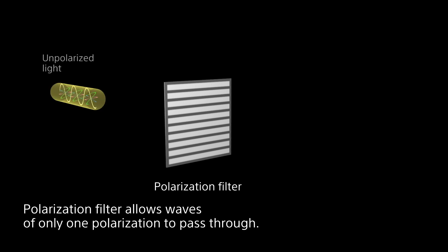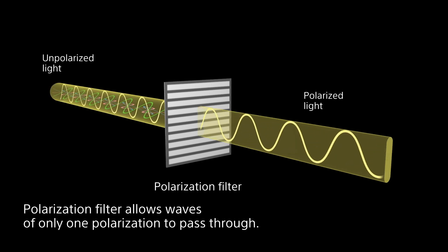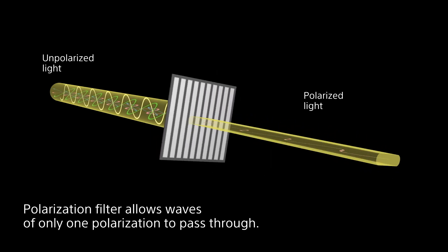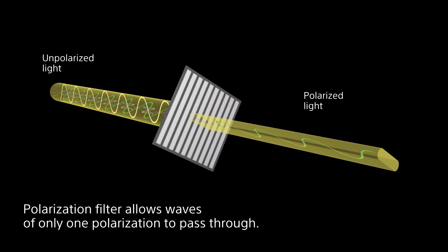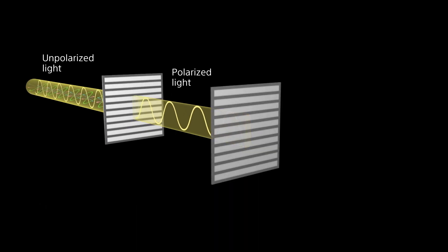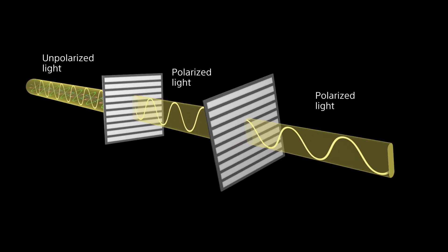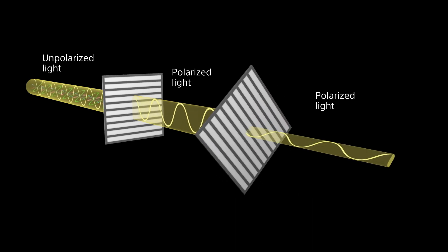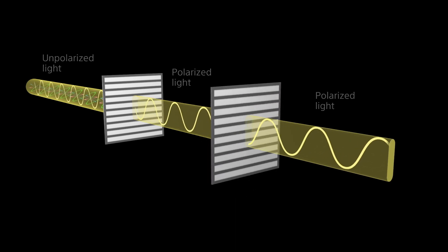By using a polarisation filter, we can extract polarised light. When polarised light enters the polarisation filter, the intensity of outgoing light changes depending on the relative angle between the polarised direction of incoming light and the polariser.